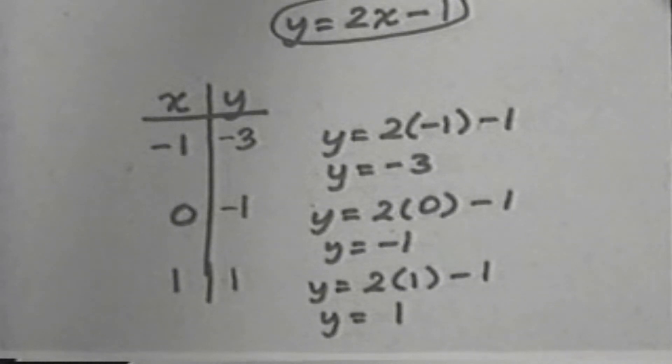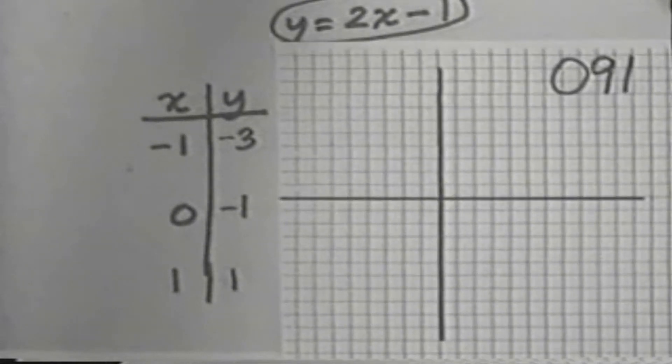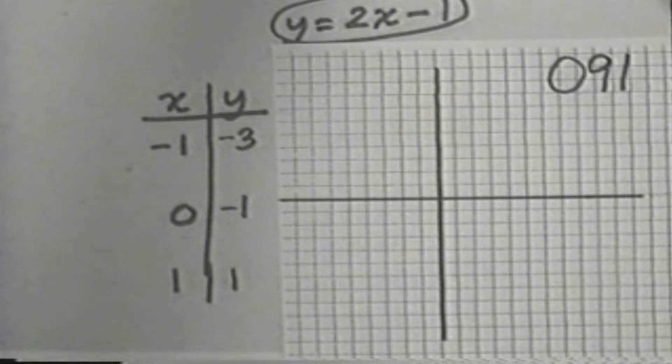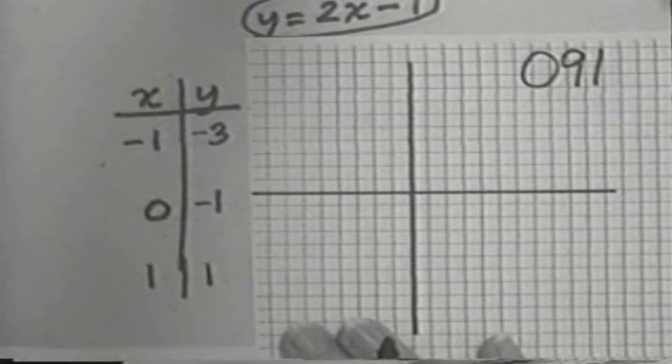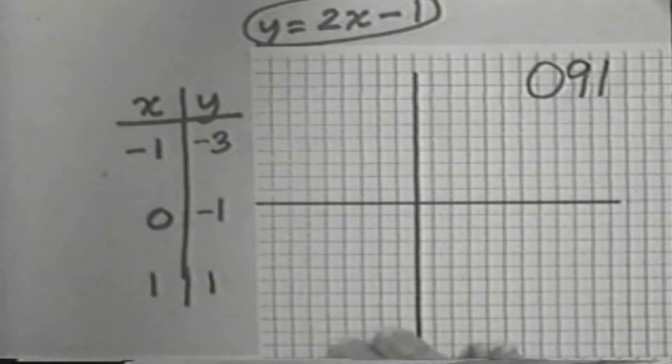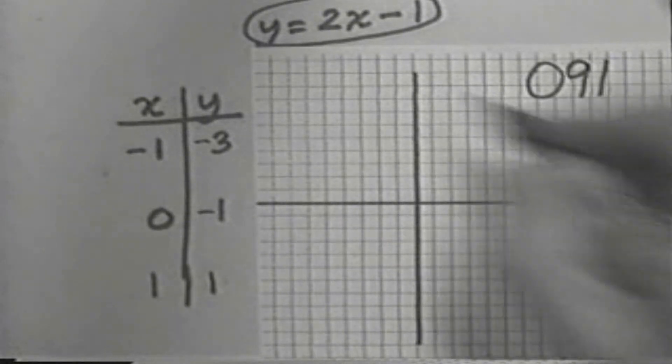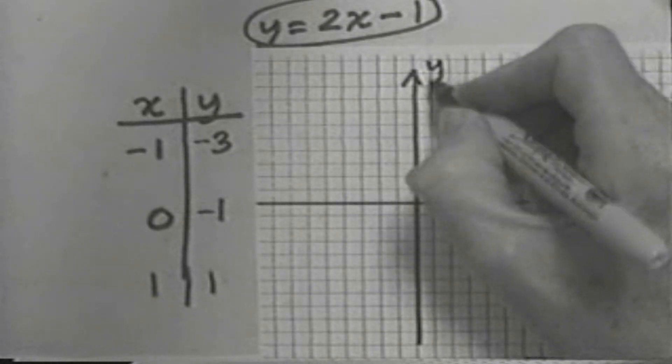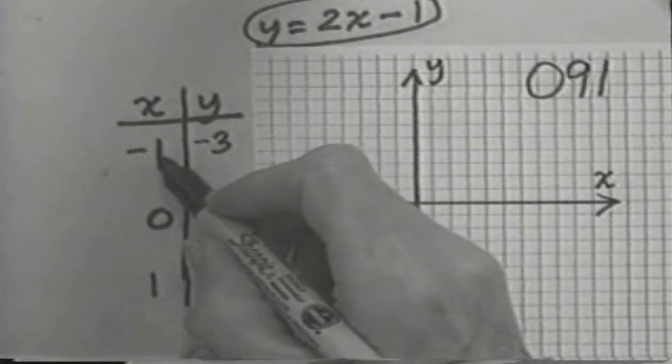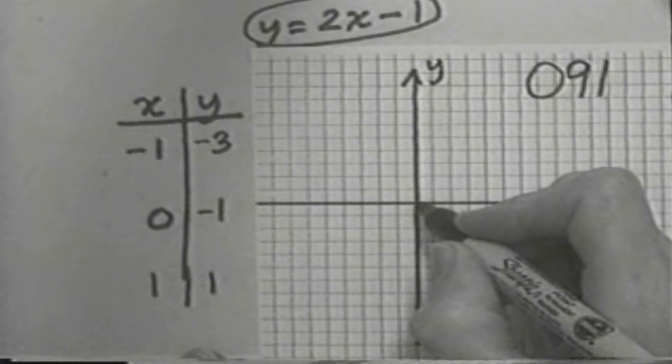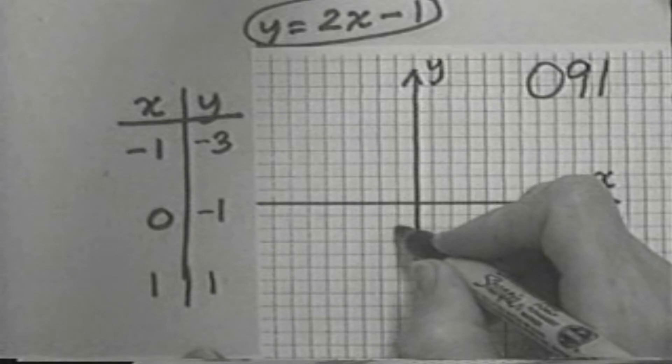Now let's get some graph paper, and we'll graph these three points, which will allow us to graph the line. So graphing y equals 2x minus 1, I'll slide this over a bit so I can draw my graph easily. An x-axis, a y-axis. And then I'm going to graph these accurately. x is negative 1, y is negative 3 for the first point, so to the left one, down 3, there's a dot.